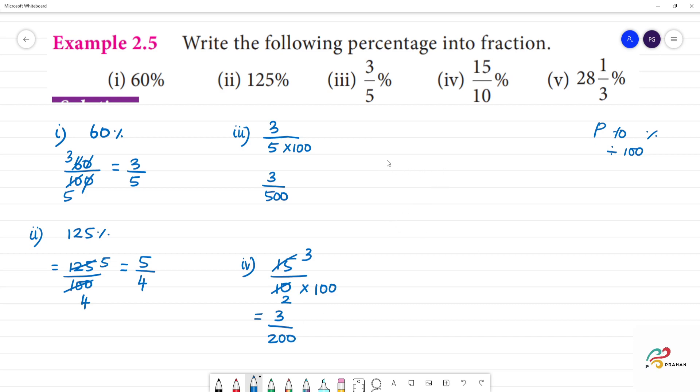Next, fifth one. Mixed fraction, 28 and 1 by 3. Convert to improper fraction. 28 into 3 - 8, 3s are 24, remainder 2. 3 into 6, 7, 8. We will add 1. 85 by 3.